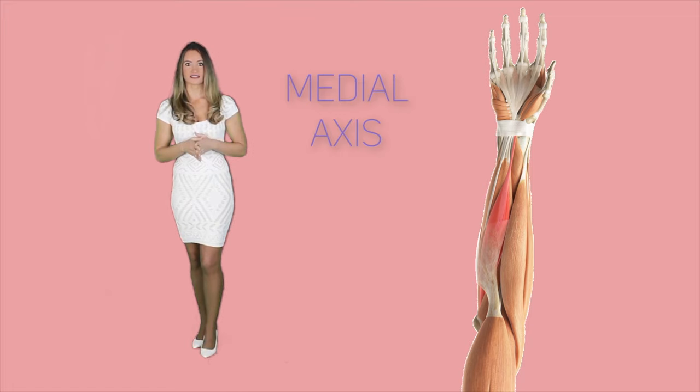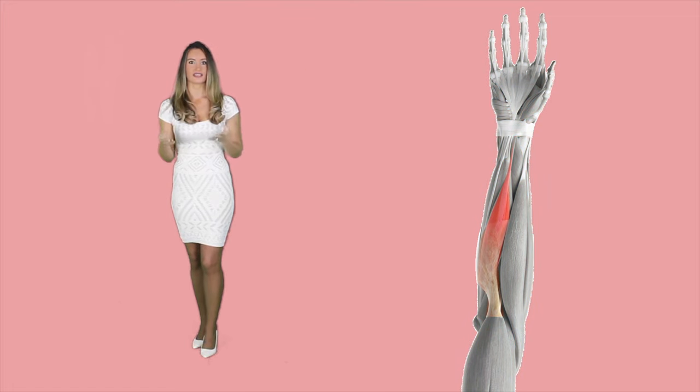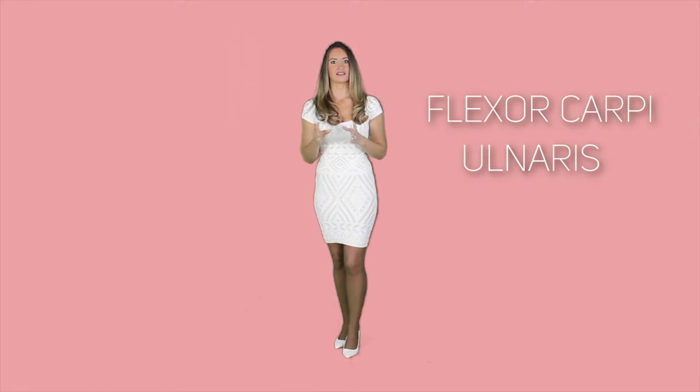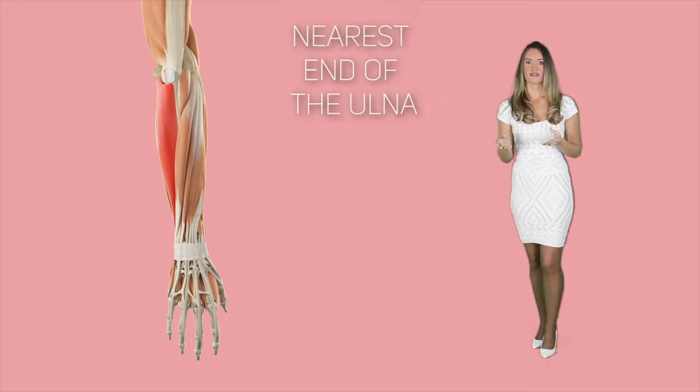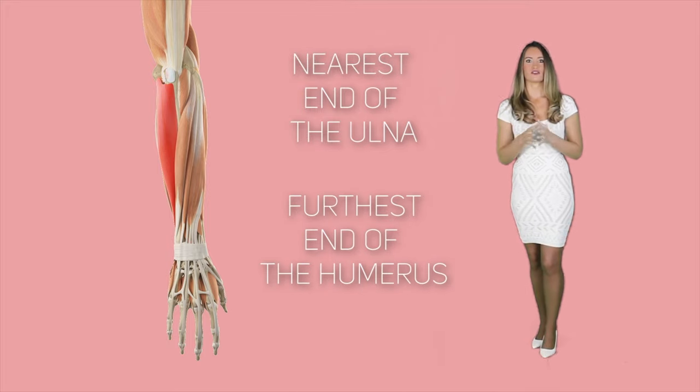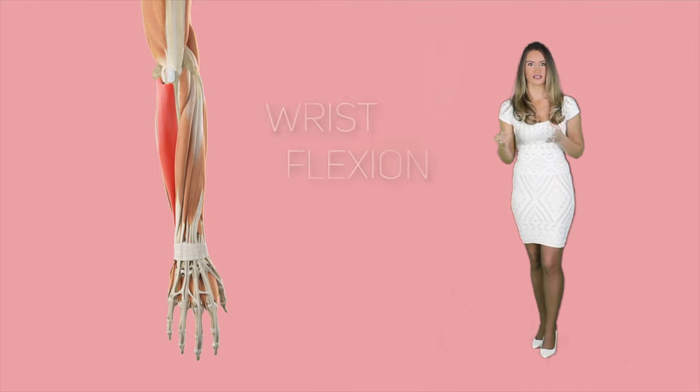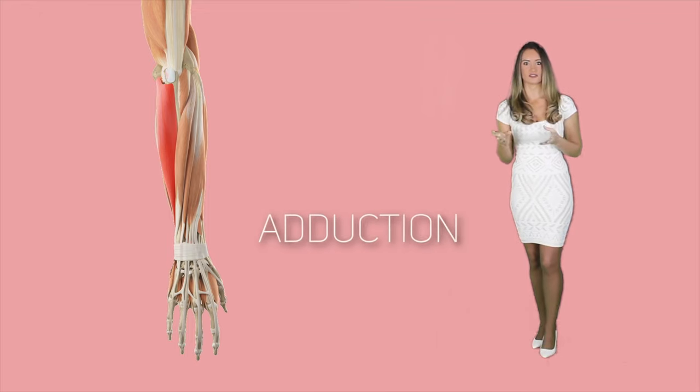Flexor muscles of the hands include the flexor carpi radialis, which is very fleshy and runs in the medial axis anteriorly in the forearm. It attaches to the metacarpal bones from the furthermost end of the humerus, and it functions to abduct the hand and produce flexion activity of the wrist. The flexor carpi ulnaris is the second flexor muscle and borders the forearm medially, linking the nearest end of the ulna with the furthest end of the humerus and the metacarpals. It functions to produce wrist flexion and causes adduction of the hand.